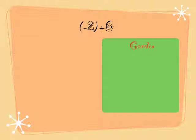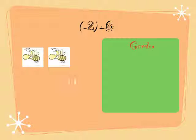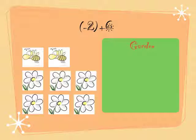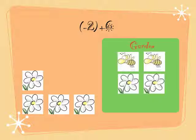Our second problem is negative 2 plus 6. So there are 2 bees and 6 flowers in the garden. Now 2 bees landed on 2 flowers. So that way, there are 4 flowers left in the garden.